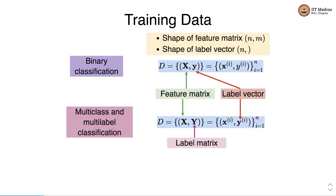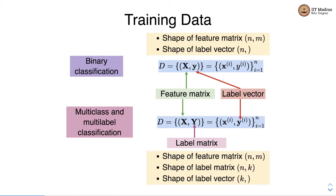The shape of the feature matrix in binary classification has n examples and m features, and the label vector has exactly n values. For multi-class and multi-label classification, there is no change in the shape of the feature matrix, but the label matrix becomes n cross k, where n is the number of examples and k is the number of classes. Each individual label vector has a shape of k, meaning there are k values in each label vector.